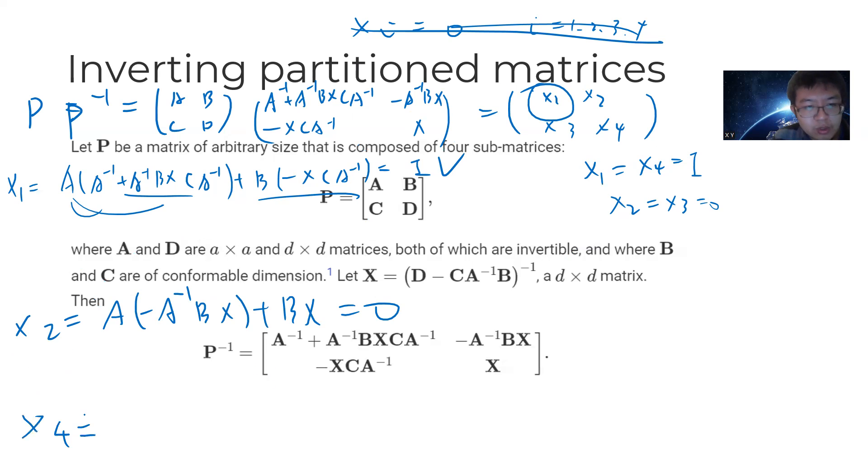Now let's check X4. X4 is this times this, so we get minus C A inverse B X plus D X. We can write this as minus times the quantity D minus C A inverse B times X. By definition, X is here, so this is identity. X4 is identity.